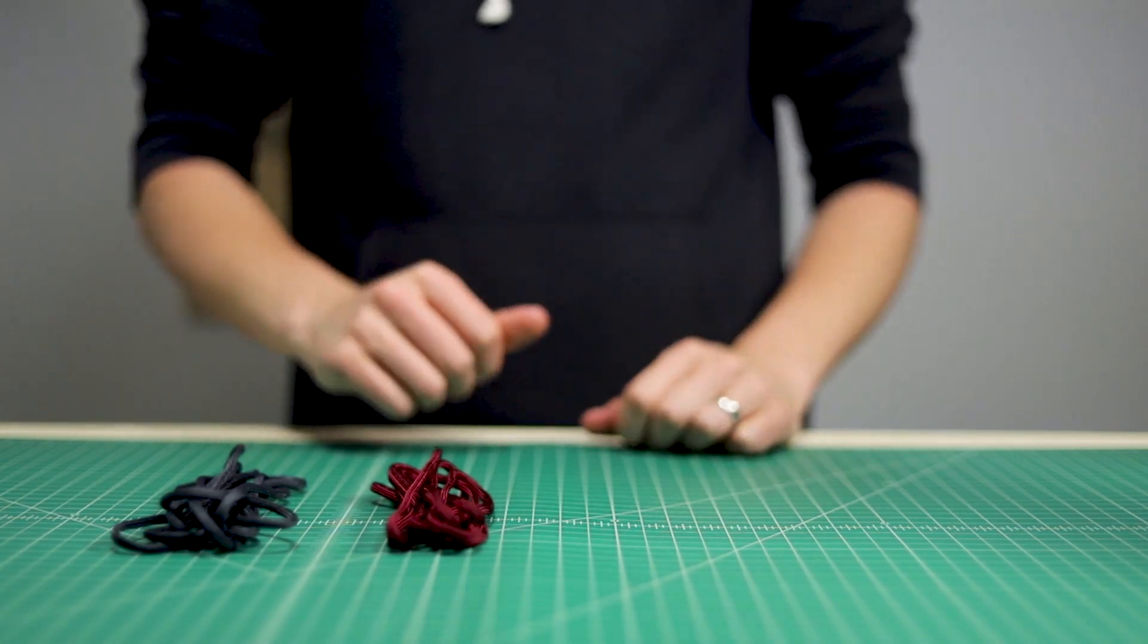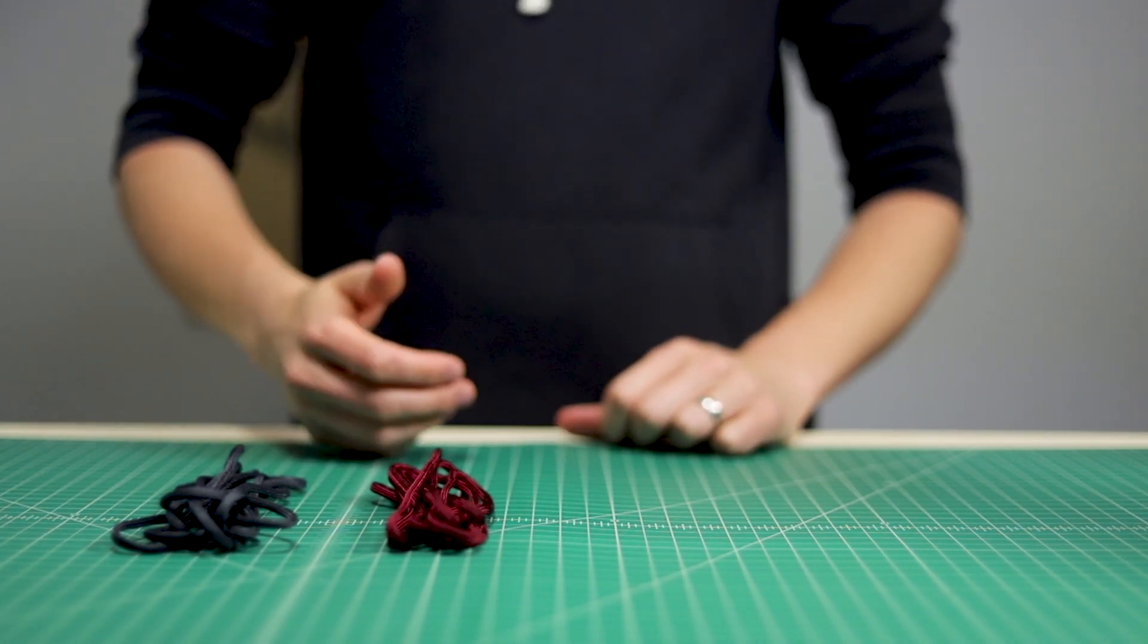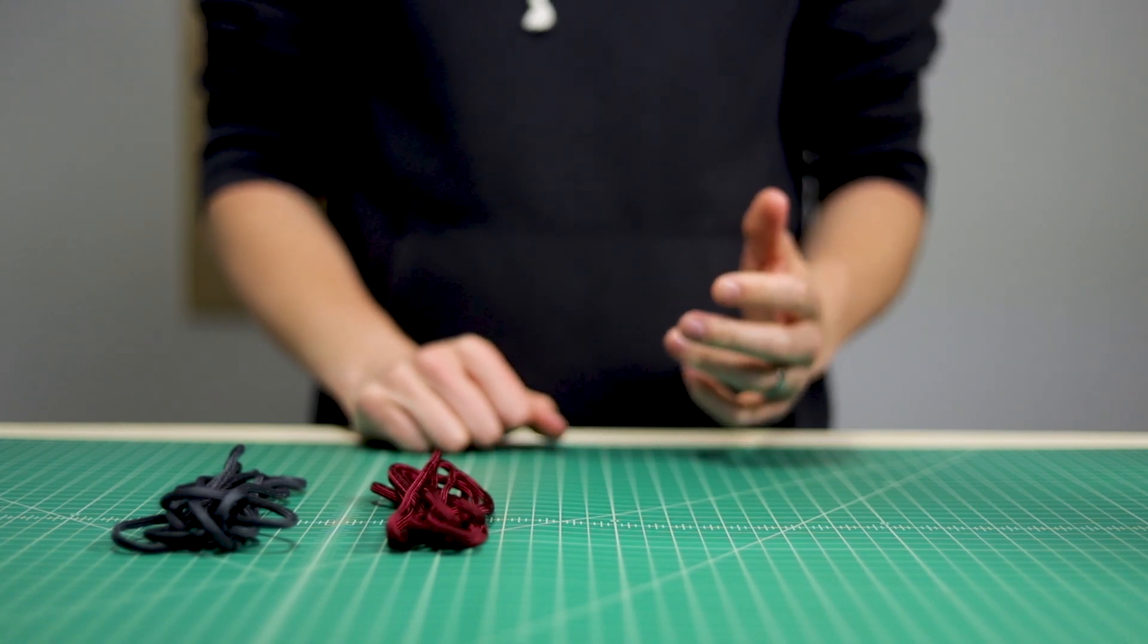Hi guys, welcome back to Paracord Planet. Today we are making a cobbled Solomon bar bracelet. That's kind of a mouthful.